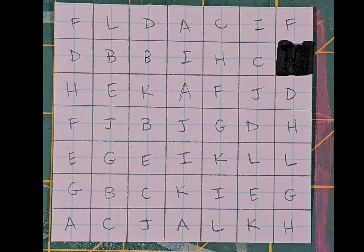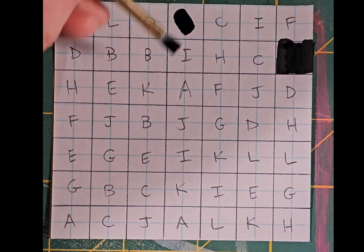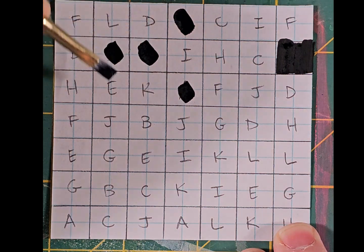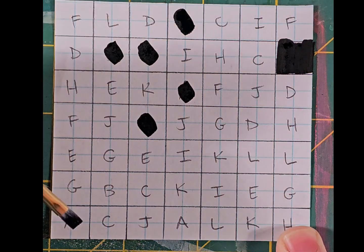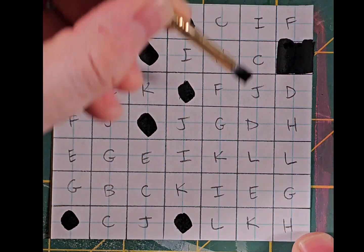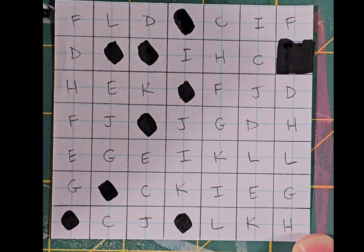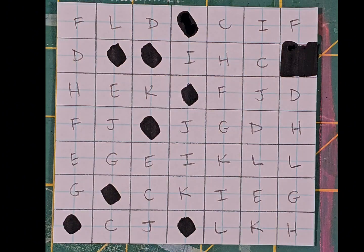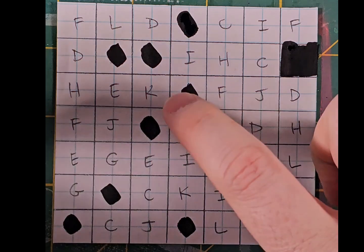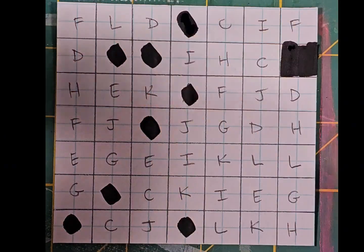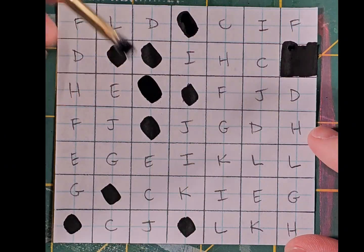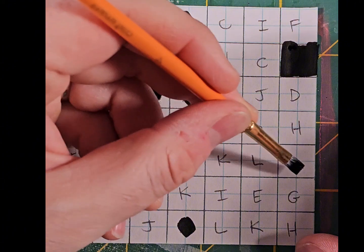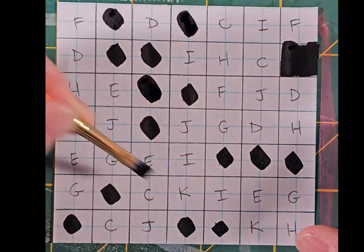Each letter represents a photon. The closer to A, the more energy the photon has, and thus the shorter the wavelength. A and B photons are high-energy ultraviolet photons, which are invisible, so I'm blacking them out. The closer it is to L, the less energy the photon has, and K and L are infrared photons, which are also invisible to us, so let's black those out too.